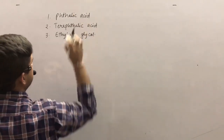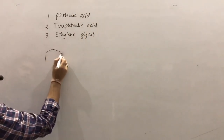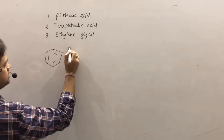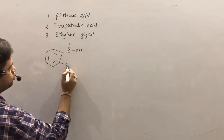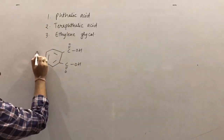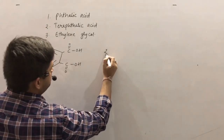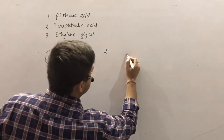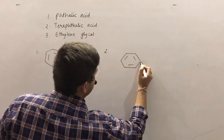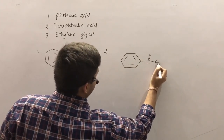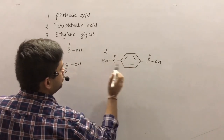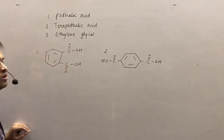Phthalic acid is a dicarboxylic acid — it is basically benzene-1,2-dicarboxylic acid, having two carboxylic groups at ortho positions on a benzene ring. Terephthalic acid is a para-dicarboxylic acid, that is benzene-1,4-dicarboxylic acid.